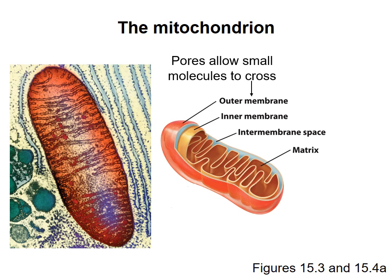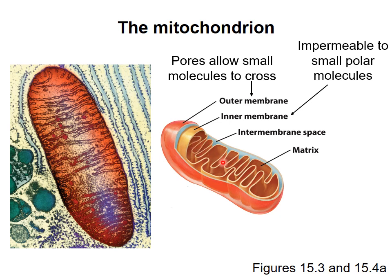The inner membrane does not have these pores in it, so the inner membrane is impermeable to small polar molecules. If it's an ion or a molecule like pyruvate, it needs a transporter or a channel to get across the inner membrane. The other thing you notice about the inner membrane is that it has these folds in it called cristae (C-R-I-S-T-A), and these folds increase the surface area of the inner mitochondrial membrane, which is important because many chemical reactions happen on the inner membrane.